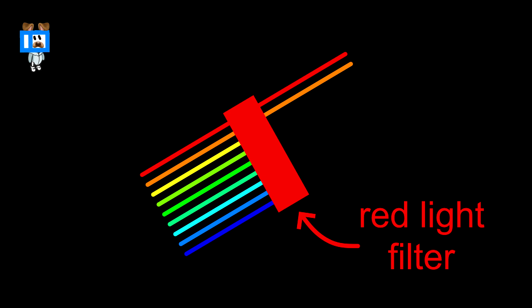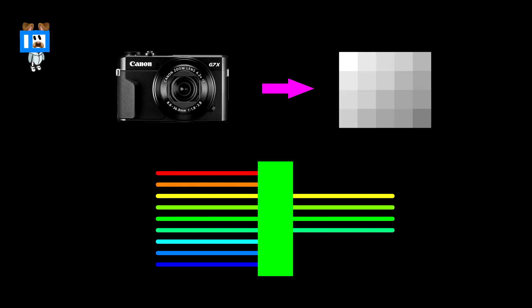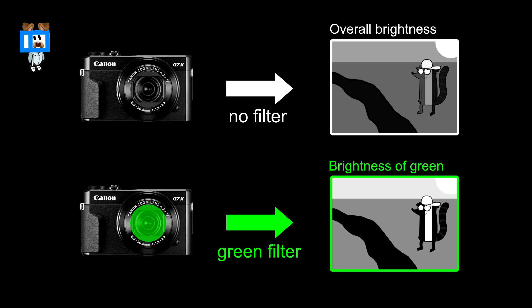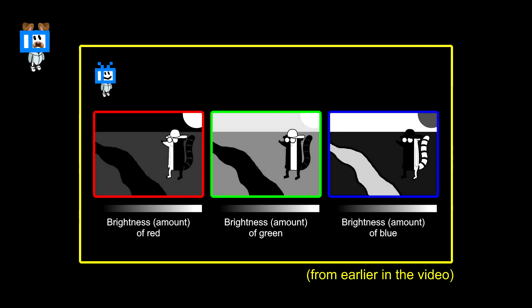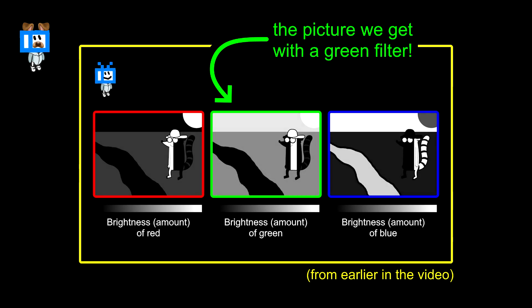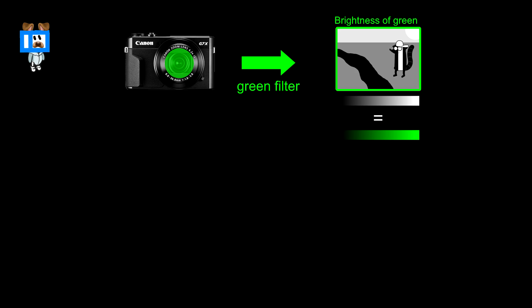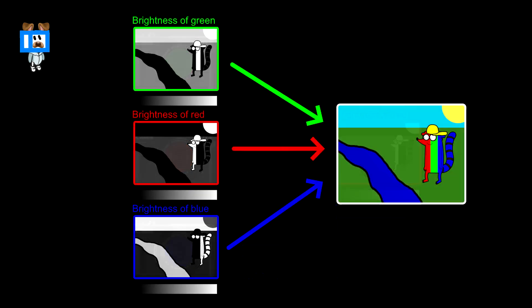Now this is where we need to use color filters. The camera detects brightness, and the color filter only lets a certain color of light pass through. So if we put a green filter in front of the camera, now it detects the brightness of green — which, as you hopefully remember from earlier, is one of the images we would get after splitting the image into three different colors. The brightness spectrum now shows us the amount of green. So if we do this for red and blue as well, then combine them, we get a beautiful picture of Rigby.